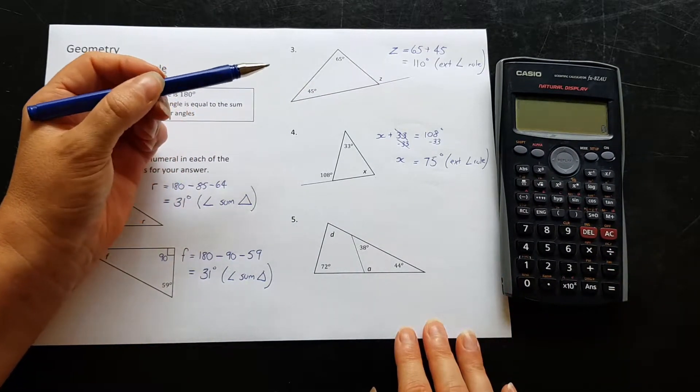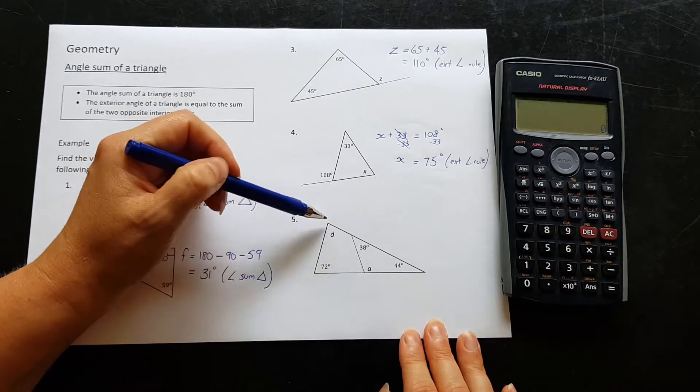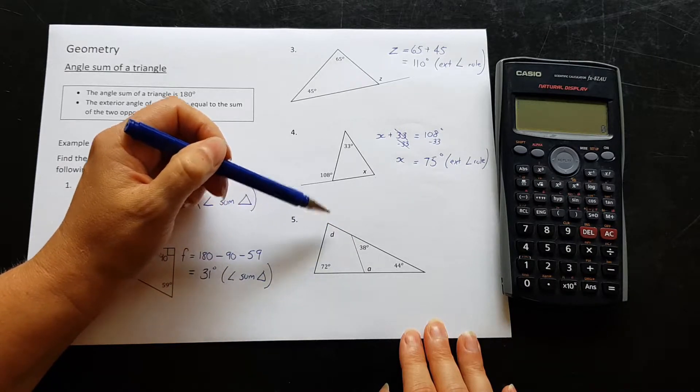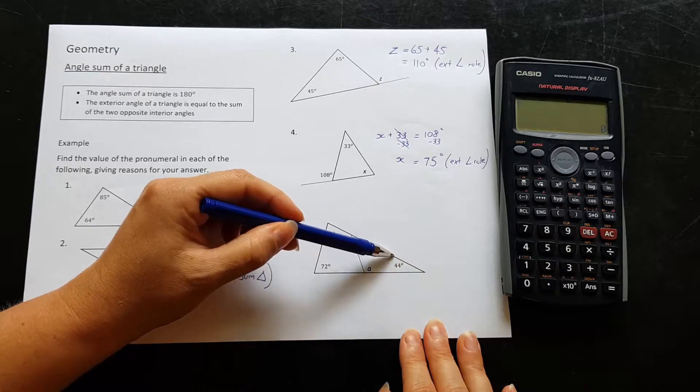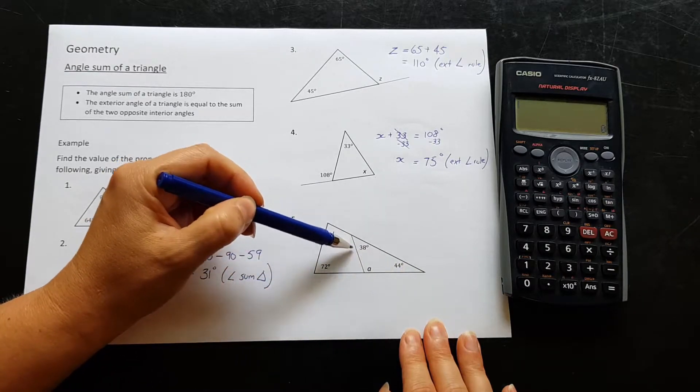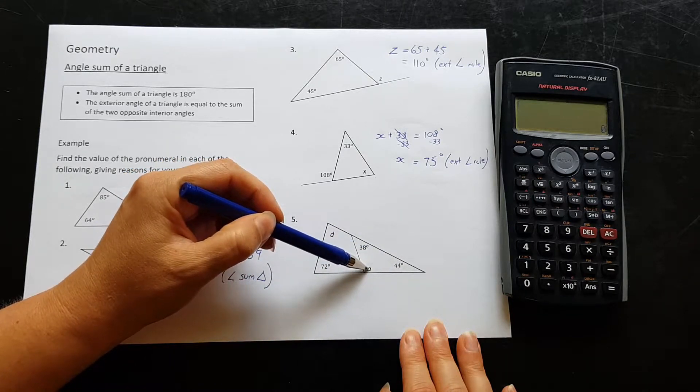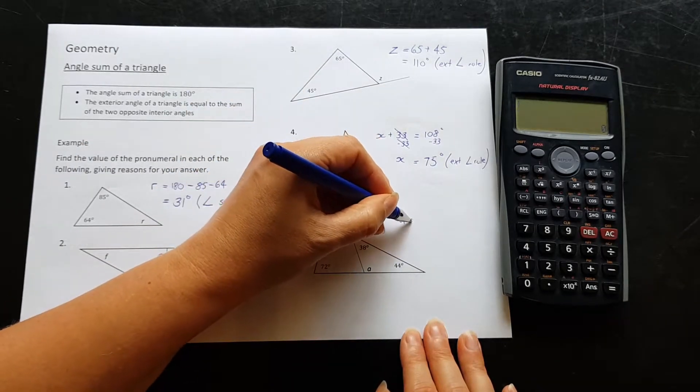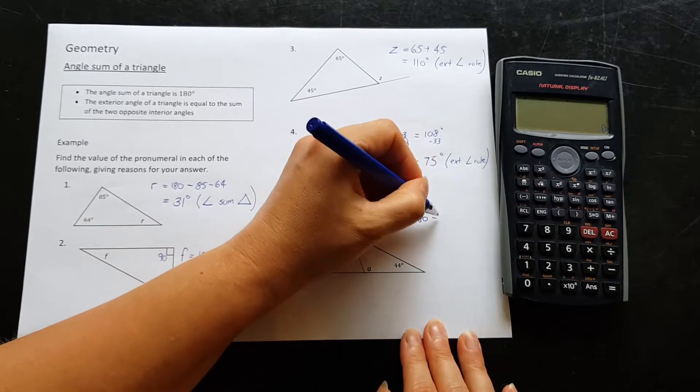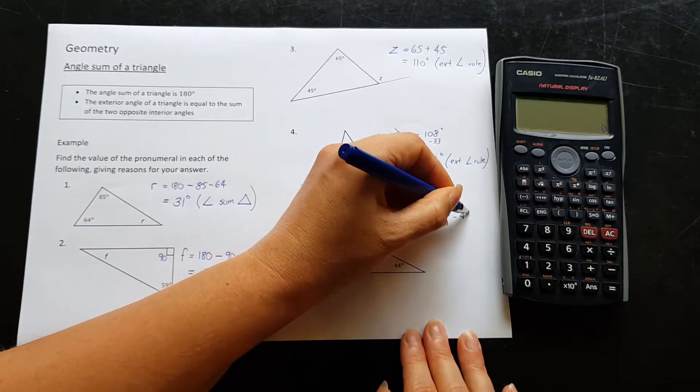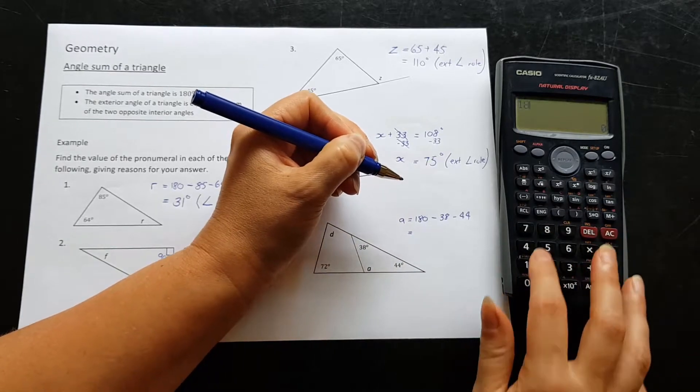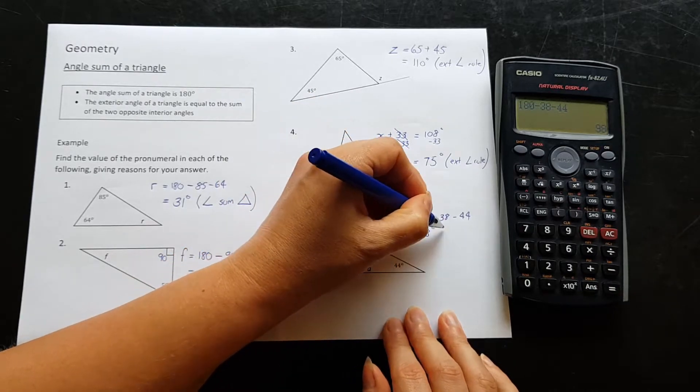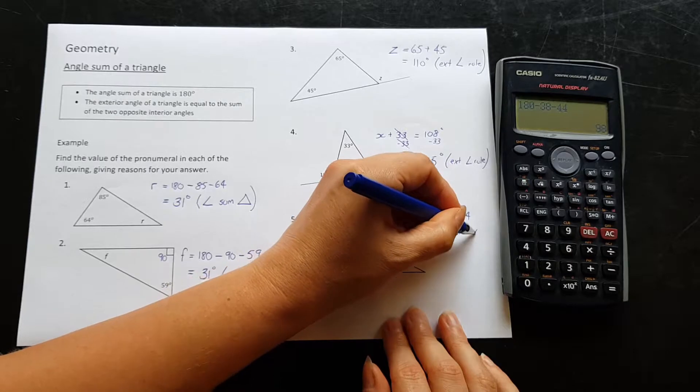Question five. It's a little bit more complicated, this shape, and there are two pronumerals here that we want to find. Okay, so first of all, if we look just in this triangle here, we can see that we have two angles and we're trying to find this third one. So we can just do angle sum of a triangle for that one. So a is equal to 180 minus 38 minus 44. 180 minus 38 minus 44 is equal to 98 degrees. Angle sum of a triangle.